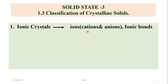Therefore all salts are examples of ionic crystals — sodium chloride, potassium chloride, sodium nitrate, potassium nitrate — these are all ionic crystals.